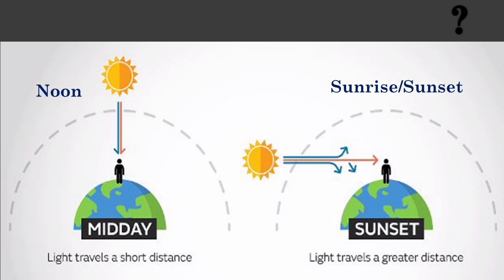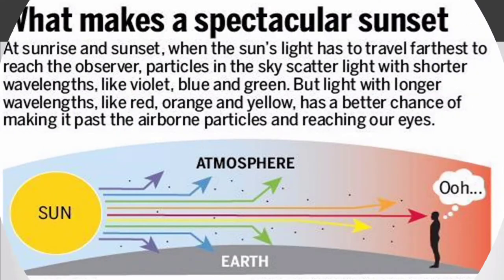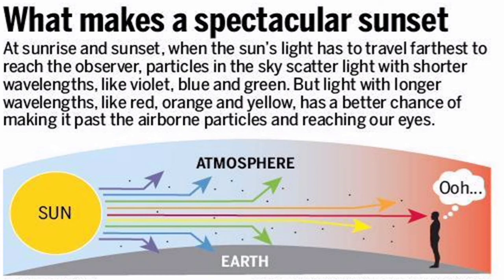During the sunrise and sunset, the sun is near the horizon and the light rays from the sun have to pass through a larger distance in the atmosphere.